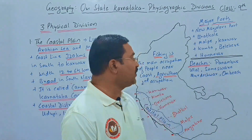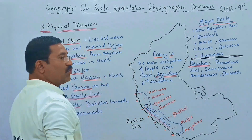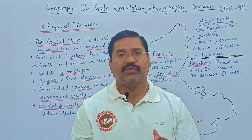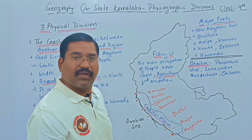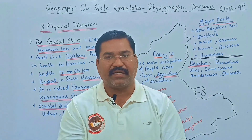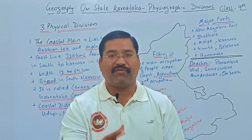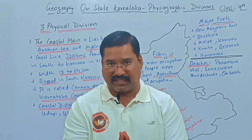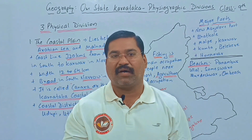These are all the key points about the first physical division of Karnataka, the coastal plain. By observing the points written on the board, you can easily make notes. Don't forget to like and subscribe. In the next session, we will cover the two remaining physical divisions — the Malnad region and the Maidan region.